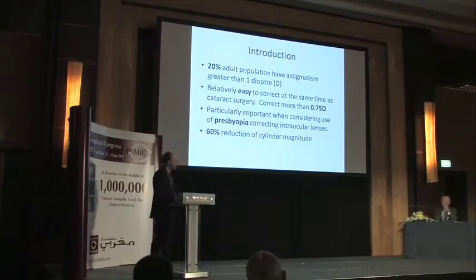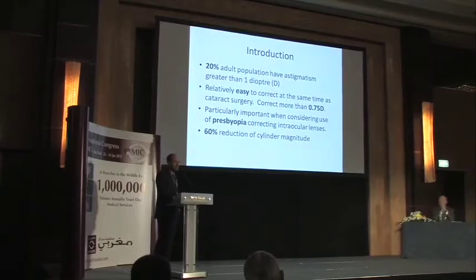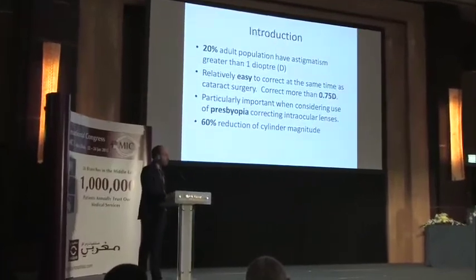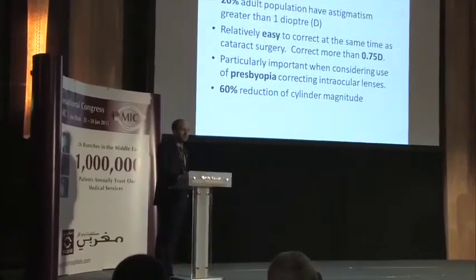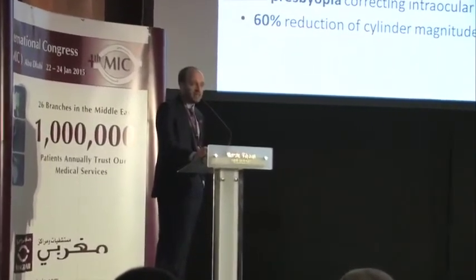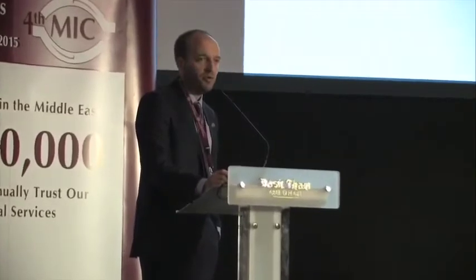As already mentioned, approximately 20 to 30 percent of patients have astigmatism greater than 1 diopter. In these patients you would certainly consider treating their astigmatism — it is relatively easy to correct at the time of cataract surgery. I would aim to correct patients with more than 0.75 diopters. It is particularly important, as mentioned, because any residual astigmatism can affect the performance of a multifocal IOL.